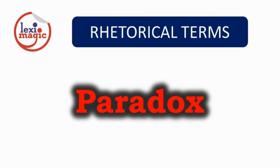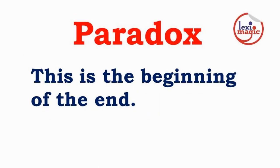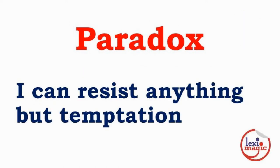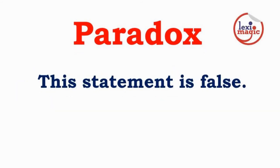Paradox is a rhetorical term consisting of two opposite terms that seem absurd but are actually valid. Examples: 'You can save money by spending it.' 'This is the beginning of the end.' 'Deep down you are really shallow.' Oscar Wilde: 'I can resist anything but temptation.' 'Here are the rules: ignore all rules.' 'This statement is false.'